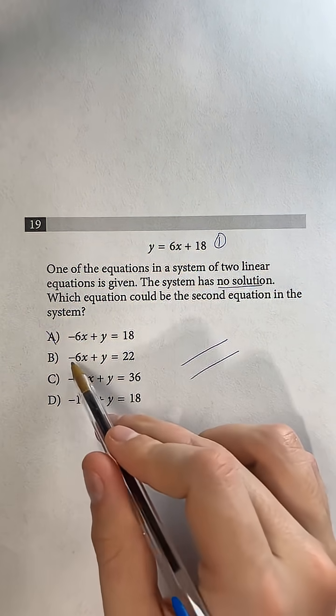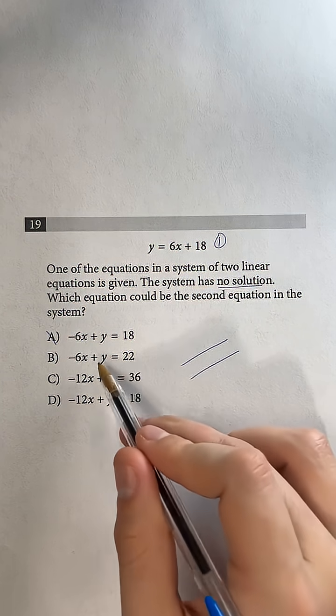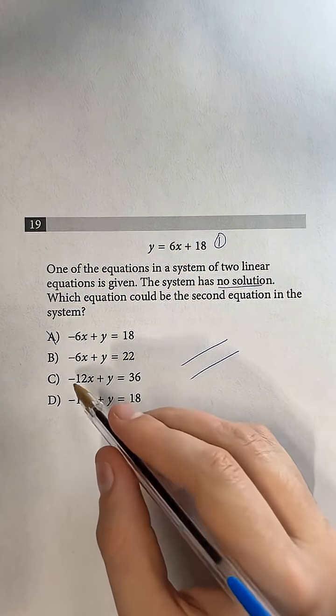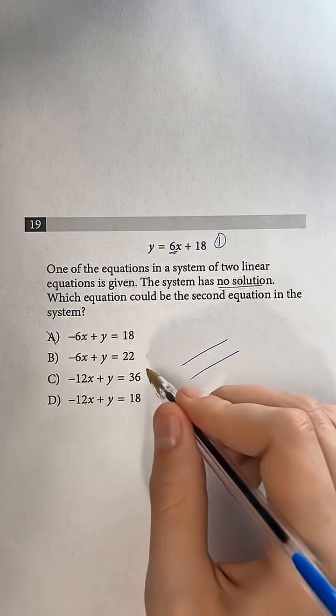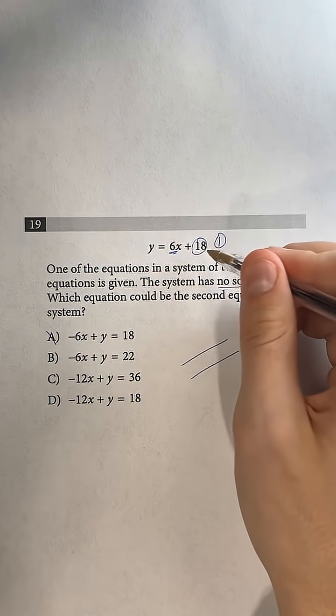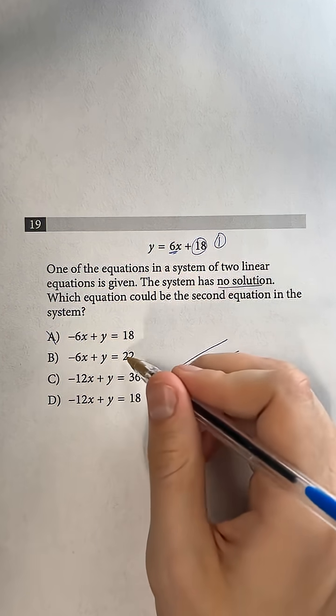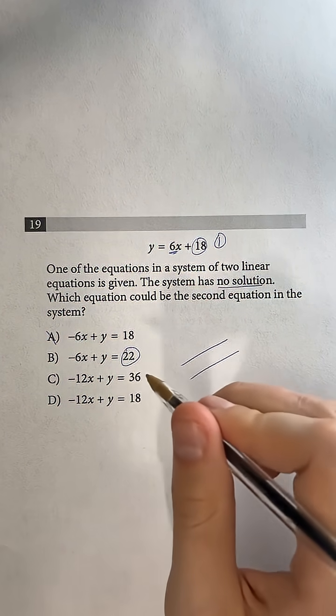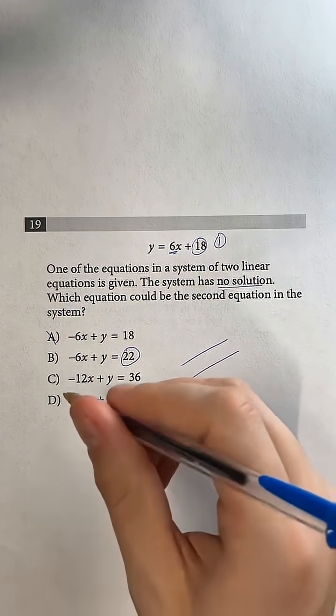And then for B, if we move that negative 6x over, we would have y equals positive 6x plus 22. So they would both have a 6 as the slope once we move this over. But then this first one would have a y-intercept of 18, and the second one would have one of 22. And so those would be parallel but with different y-intercepts. So B is going to be our answer.